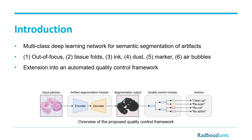To train the network we collected and annotated a diverse dataset that included multiple tissue and staining types, which makes our approach applicable to a wide variety of images. This deep learning network can be extended into a quality control framework that can automatically inform pathologists about the required actions to fix issues caused by artifacts.